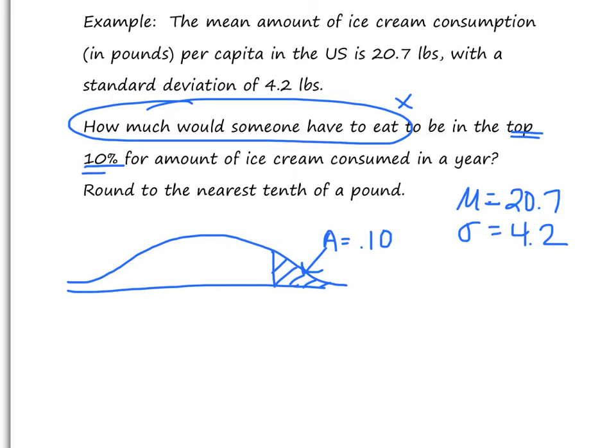So the first thing I do after I've drawn my curve and shaded to the right is look at the corresponding area - if that top area is 10%, then this area must be 0.90. They mean the exact same thing. Having 90% to the left is the same thing as having 10% to the right. But the reason I always figure out the left-hand area is because that's how the tables and the inverse norm works.